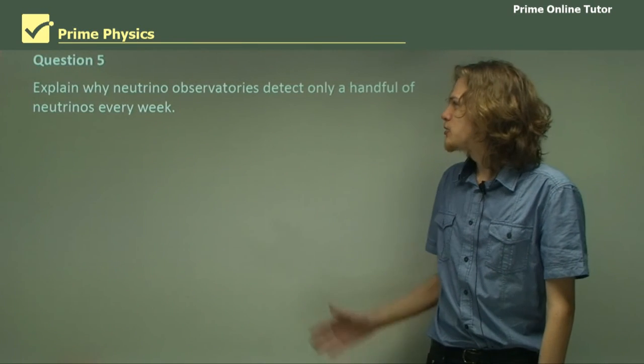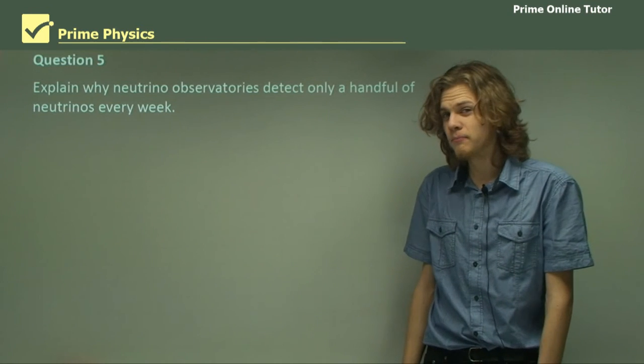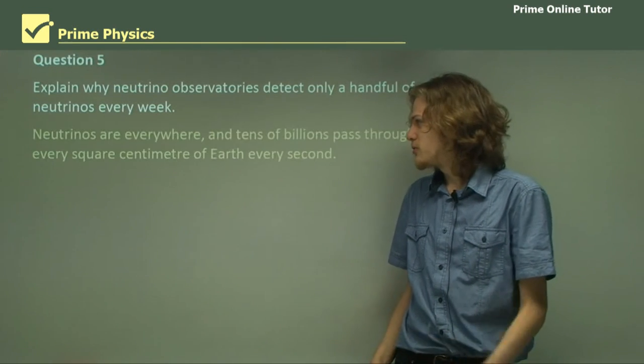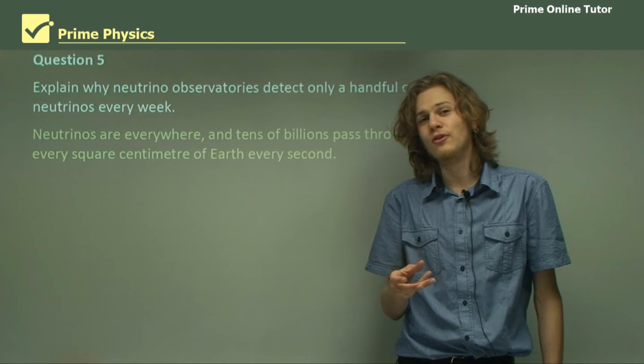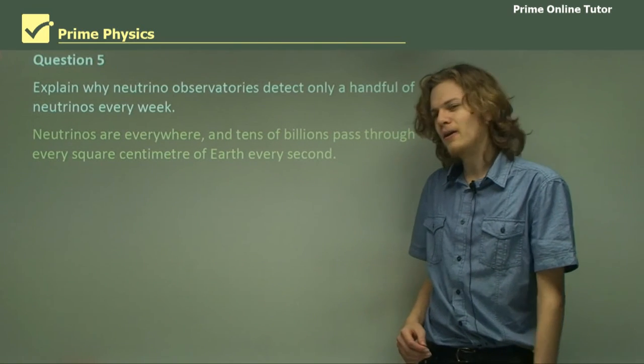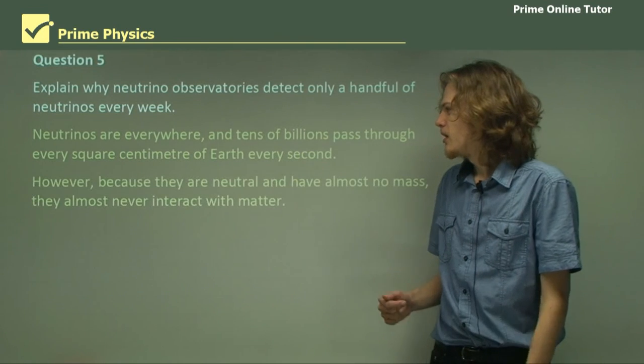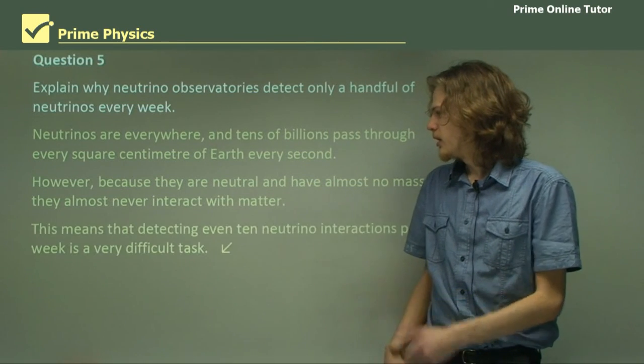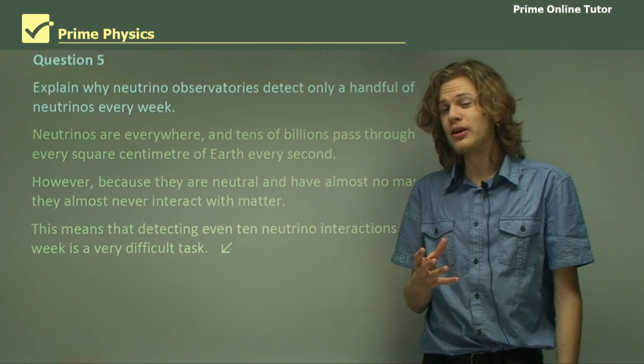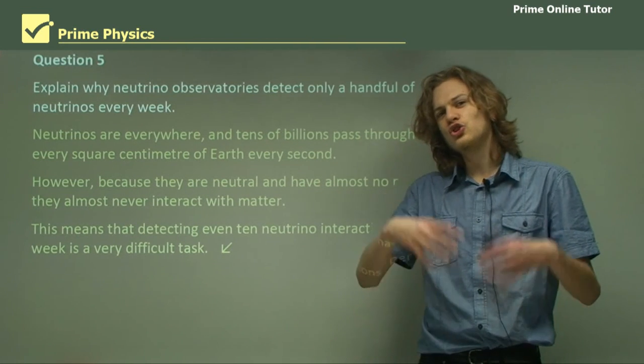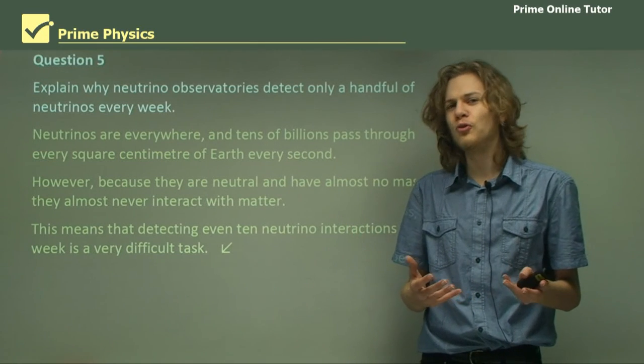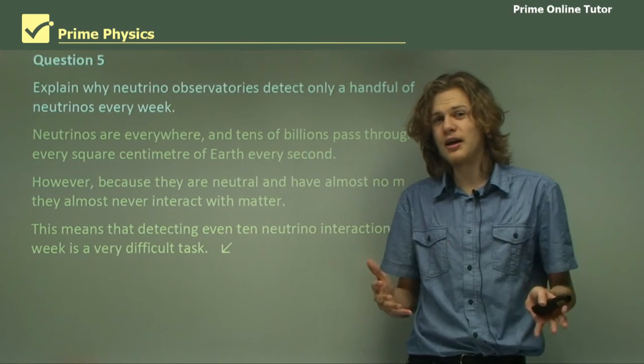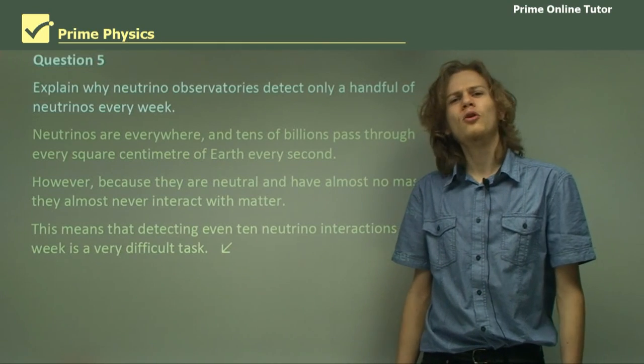Question five: explain why neutrino observatories detect only a handful of neutrinos every week. There are billions passing through us, right? Why can't they detect more? Well, the answer is that even though there are tens of billions passing through every square centimeter of Earth every second, they aren't very interactive. They are neutral, they have almost no mass, they can't really interact with matter very well. That's why it takes such huge tanks of water and thousands of dollars of photomultiplier tubes. That's the end of the questions. In this section we've learned about neutrinos, their charge, their mass, and a bit of their history.